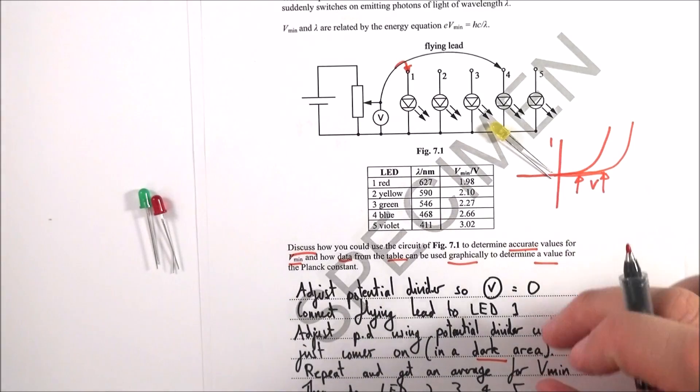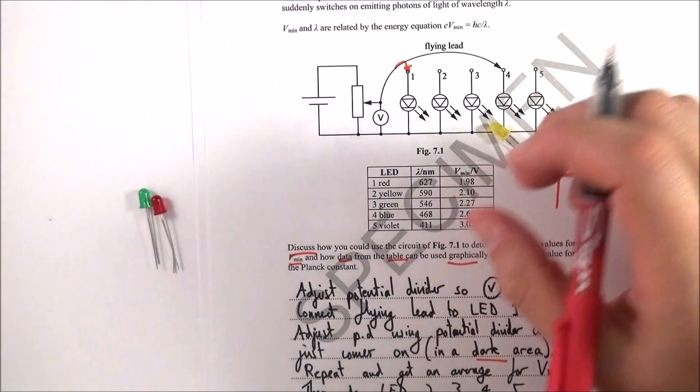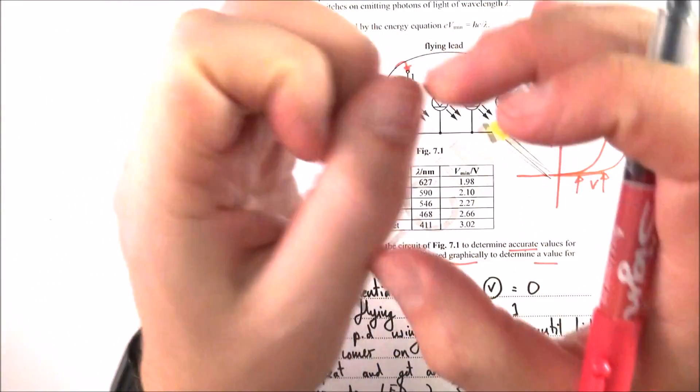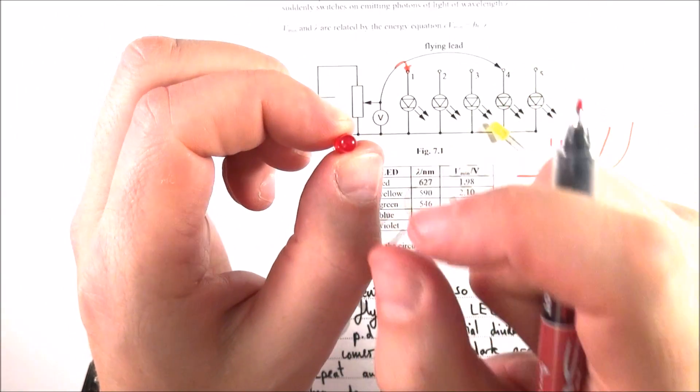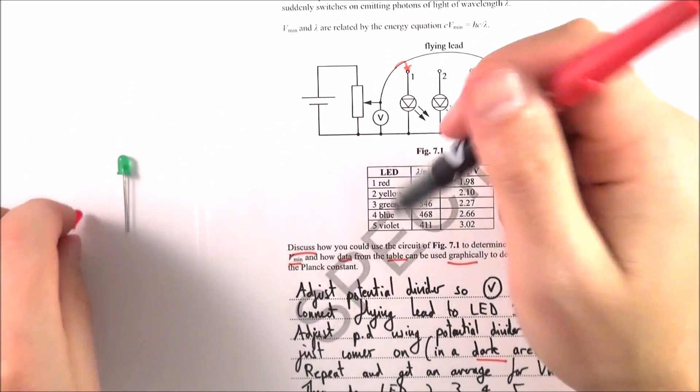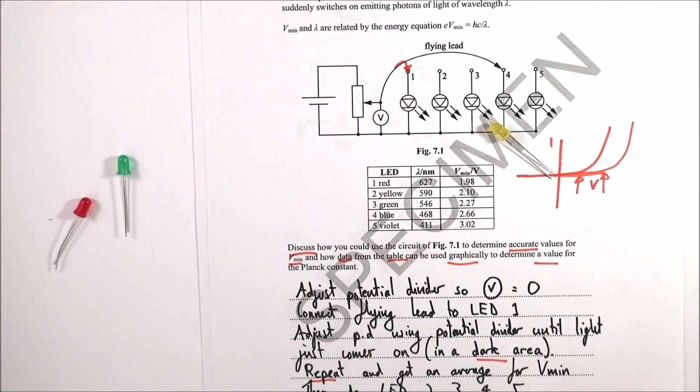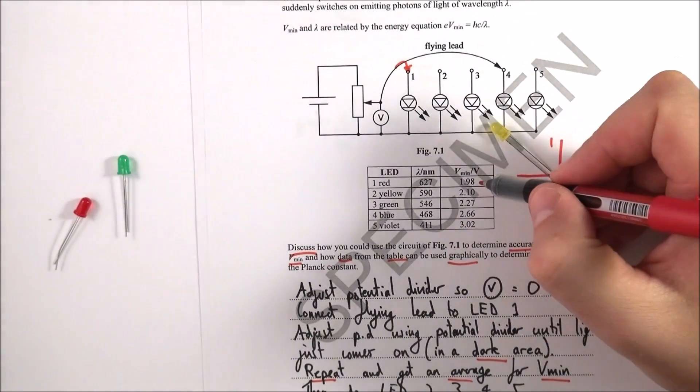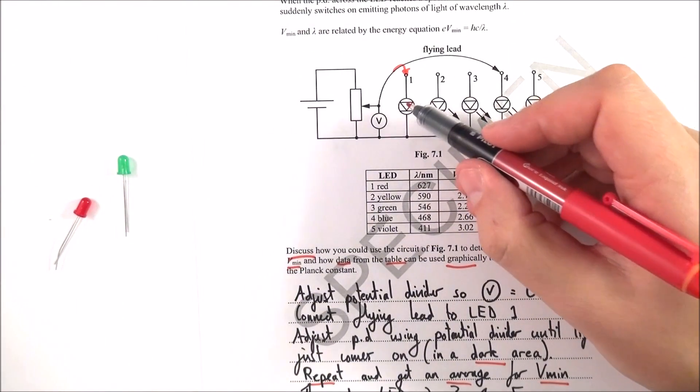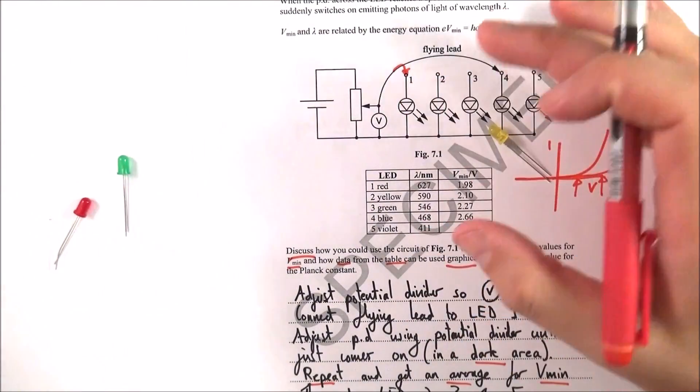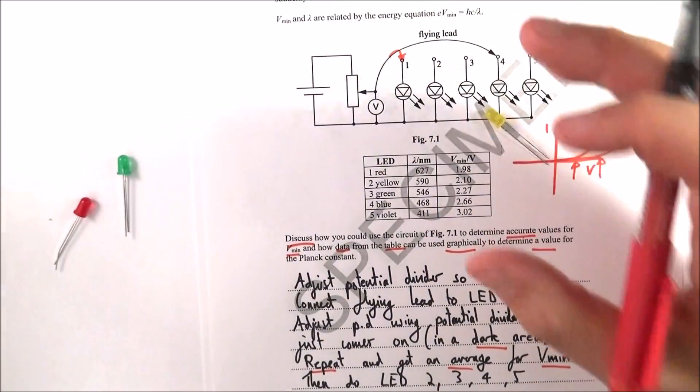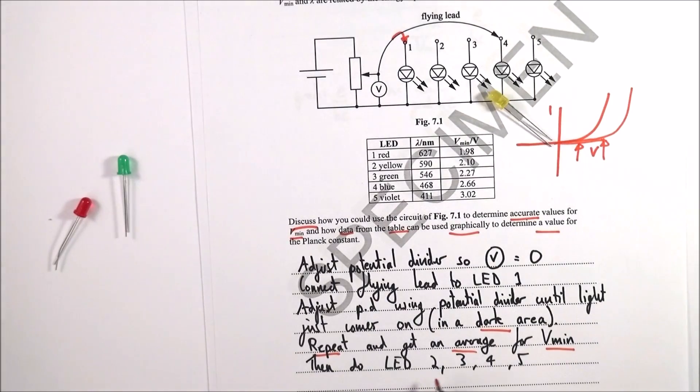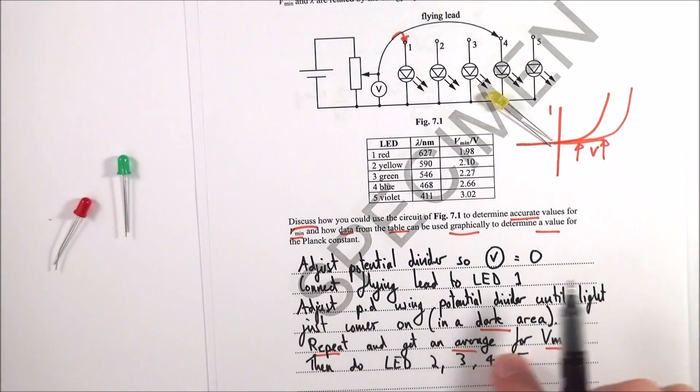You then adjust the PD up until this LED just comes on. Maybe do it in a dark area or look down a straw. You have a black straw and put it over the end of this LED, and that makes it easy to see when it turns on. You can then repeat this and get an average for vmin. This value here is the average of maybe three attempts. This is basic stuff - you repeat your results to get a better value and identify any anomalies.